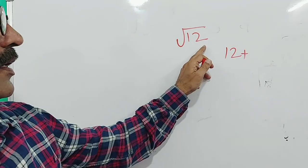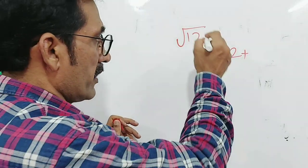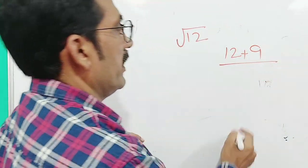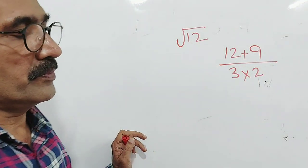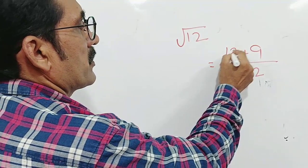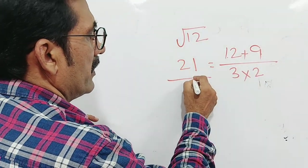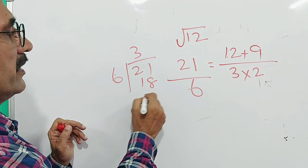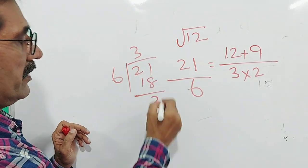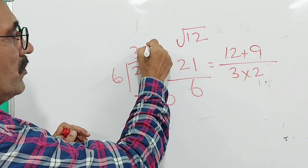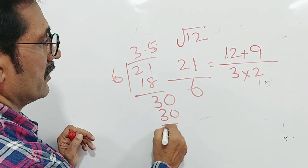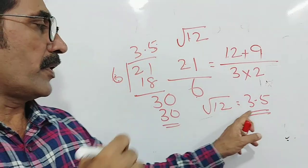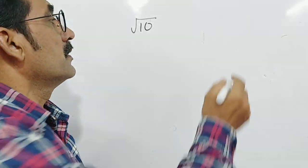For square root of 12: take 12, find the nearest perfect square, which is 9. Use the formula: (12 plus 9) divided by (2 times square root of 9). Square root of 9 is 3, double of 3 is 6. So: 12 plus 9 is 21, divided by 6. 21 divided by 6 equals 3.5. So the square root of 12 is approximately 3.5.